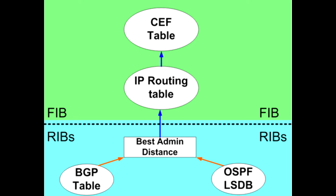RIB, or the Routing Information Base, serves as a centralized repository within a router. Its primary role is to accumulate routing information derived from various sources. These sources encompass routing protocols such as OSPF, BGP, EIGRP, as well as statically configured routes.